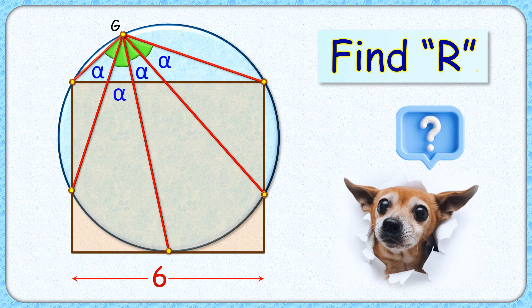Welcome everyone. This interesting question given to us is a circle and a rectangle. This point G on the circle is joined with five points of intersection between the circle and the rectangle such that these four angles formed are all equal. Given is the length of the rectangle is six centimeter. The exciting part is with this limited data we have to find the radius of circle.